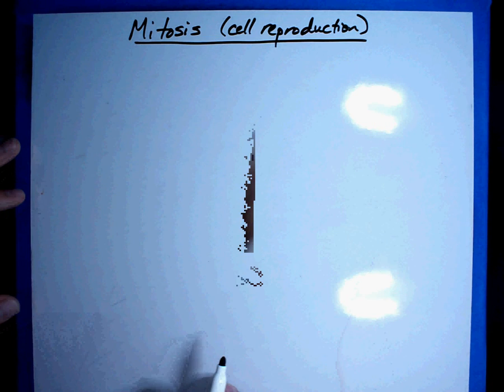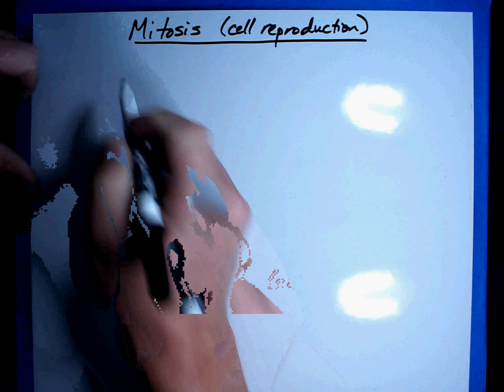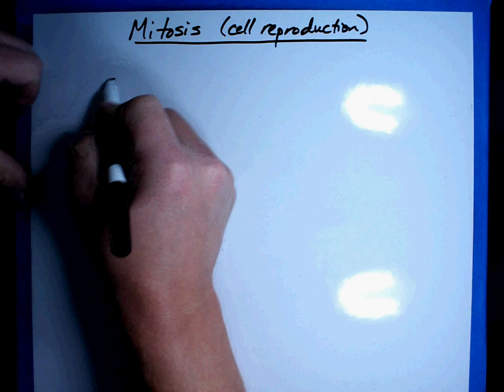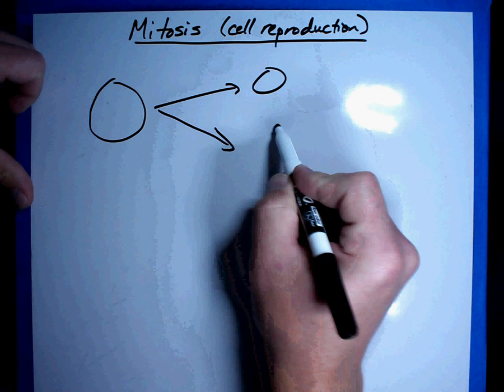Now there are a couple of reasons why a cell would go through mitosis. What we're basically going to do is we're going to take one cell and we're going to make two new cells out of it.